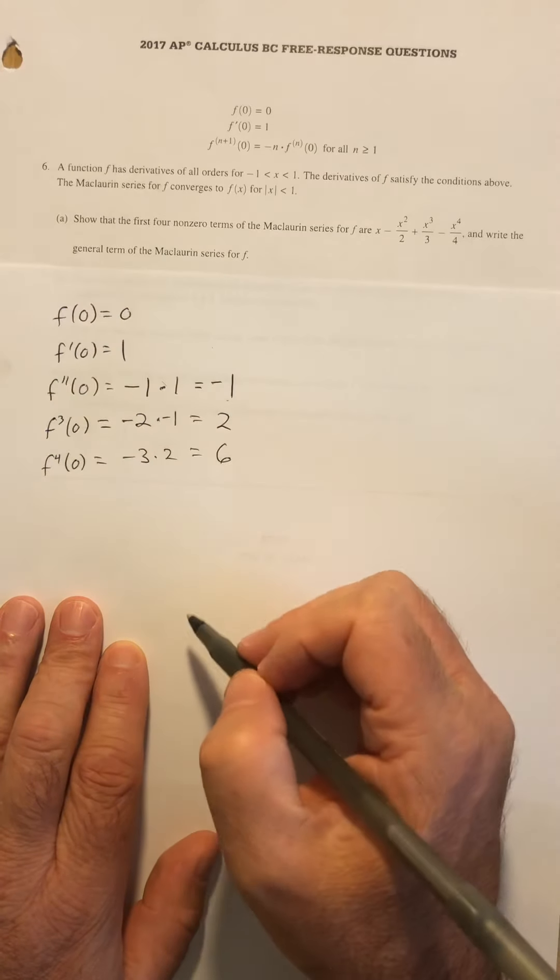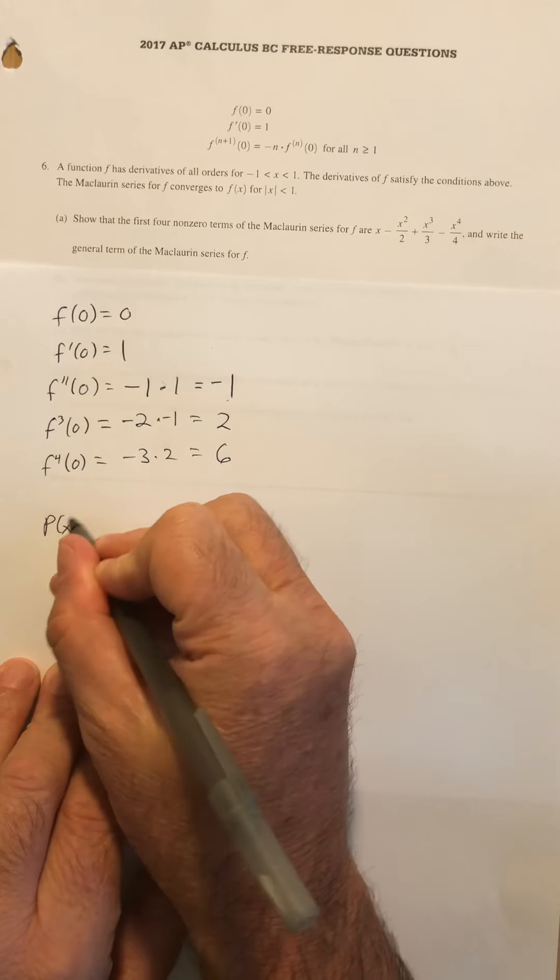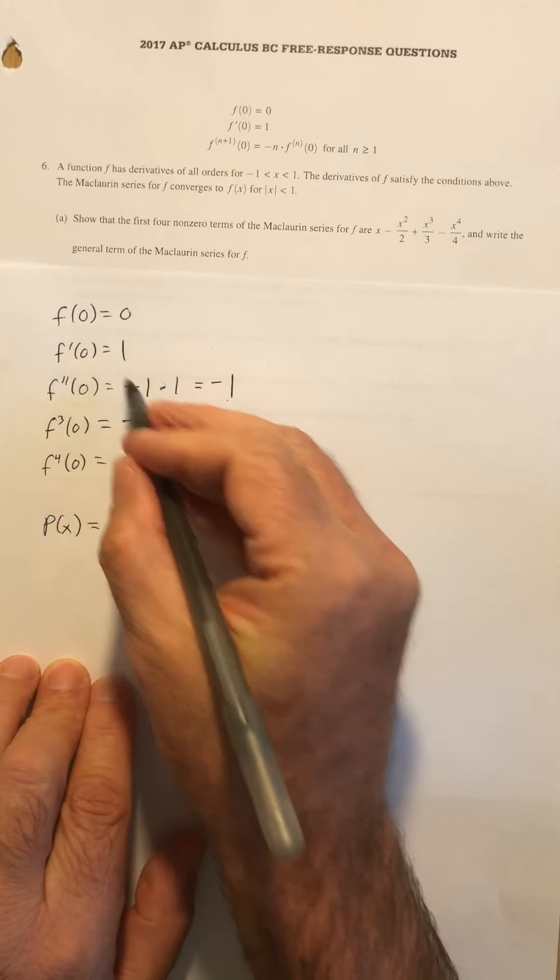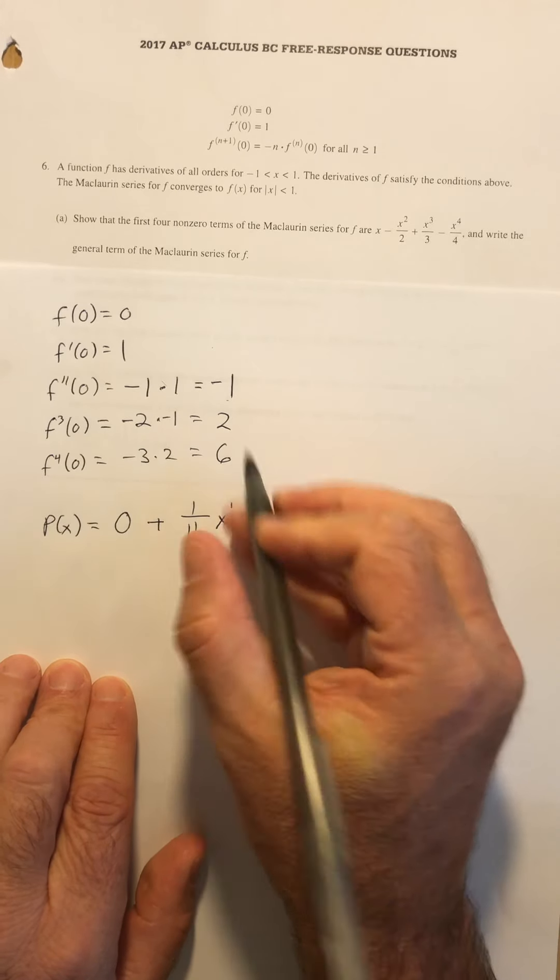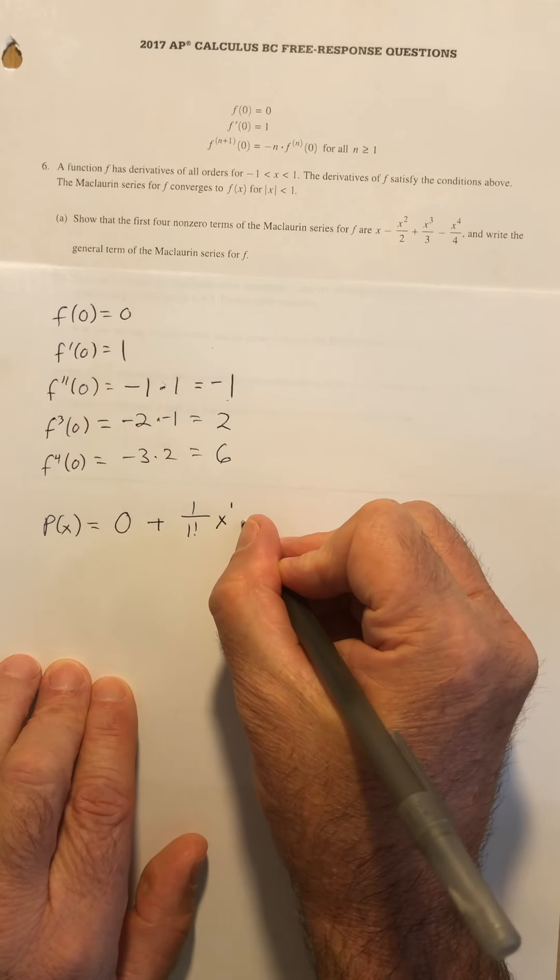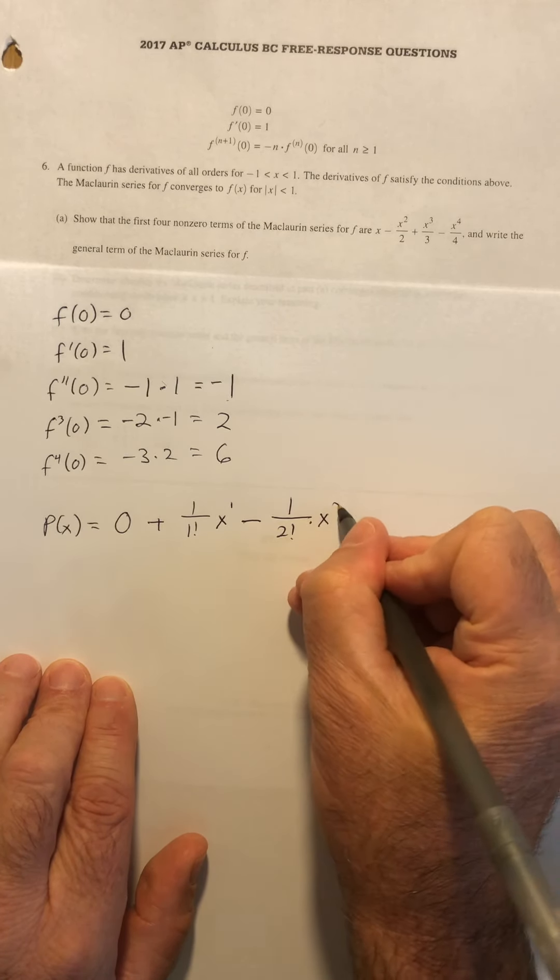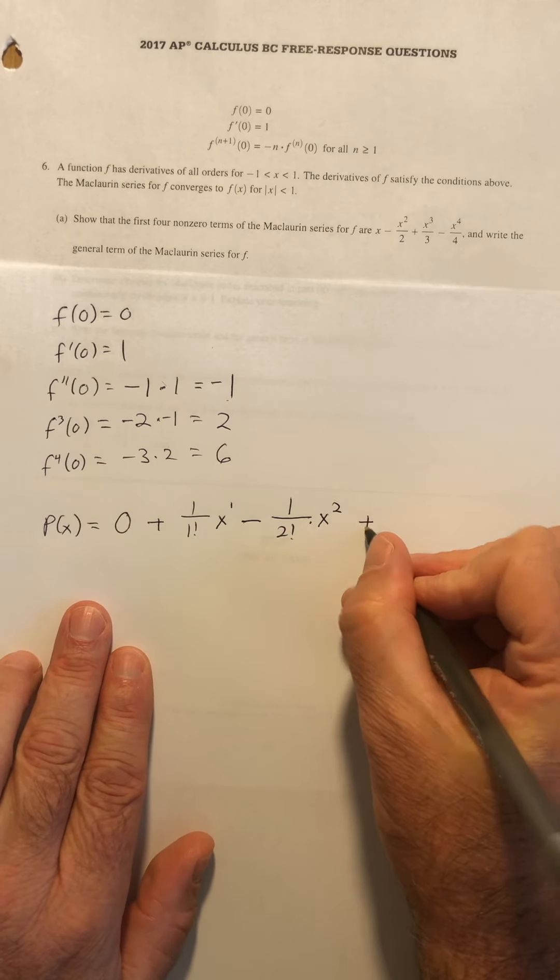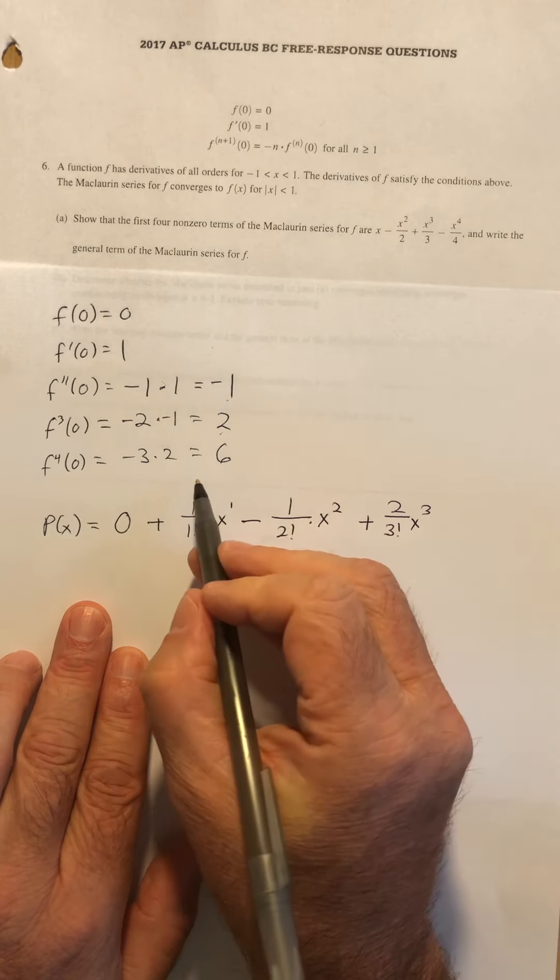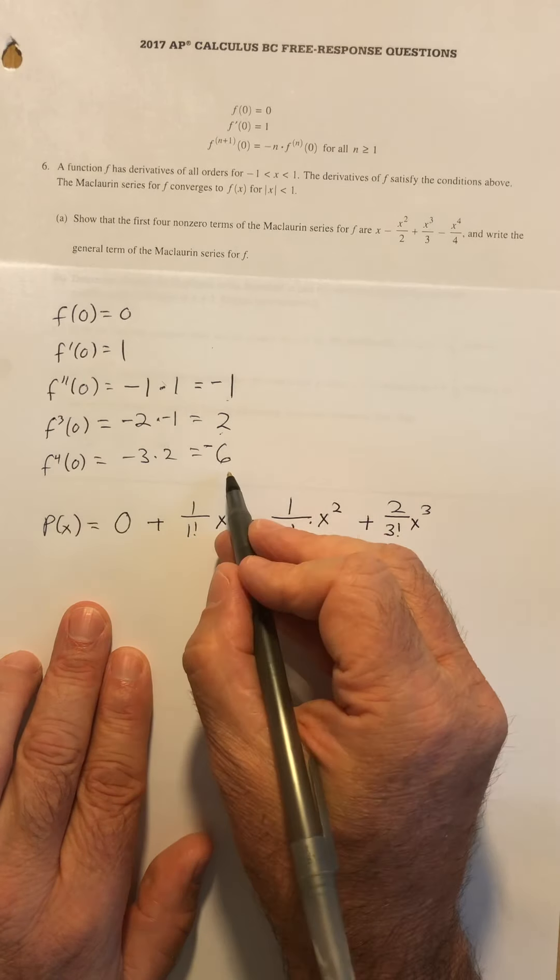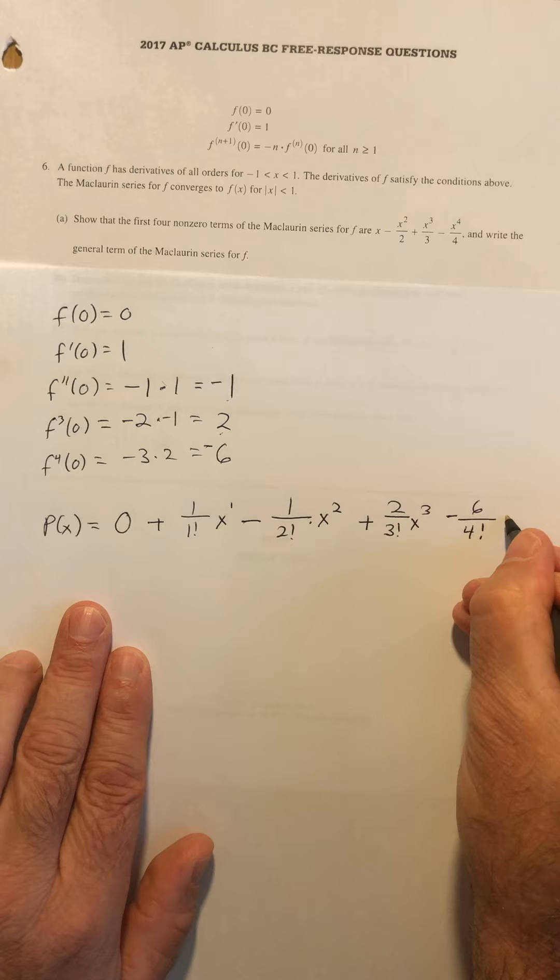Alright, we might need to do a couple more terms, but I think that's going to be enough because we just have to go out to the fourth term. Alright, so then our polynomial, remember, is going to be f of zero, which is zero. And then f prime of zero over one factorial times x to the first. And then second derivative of f, which is negative one over two factorial times x to the second. And then the third term is going to be this number two over three factorial times x to the third. And then my last number, that should have been negative six, is going to be the fourth derivative at zero, which is going to be negative six over four factorial times x to the fourth.